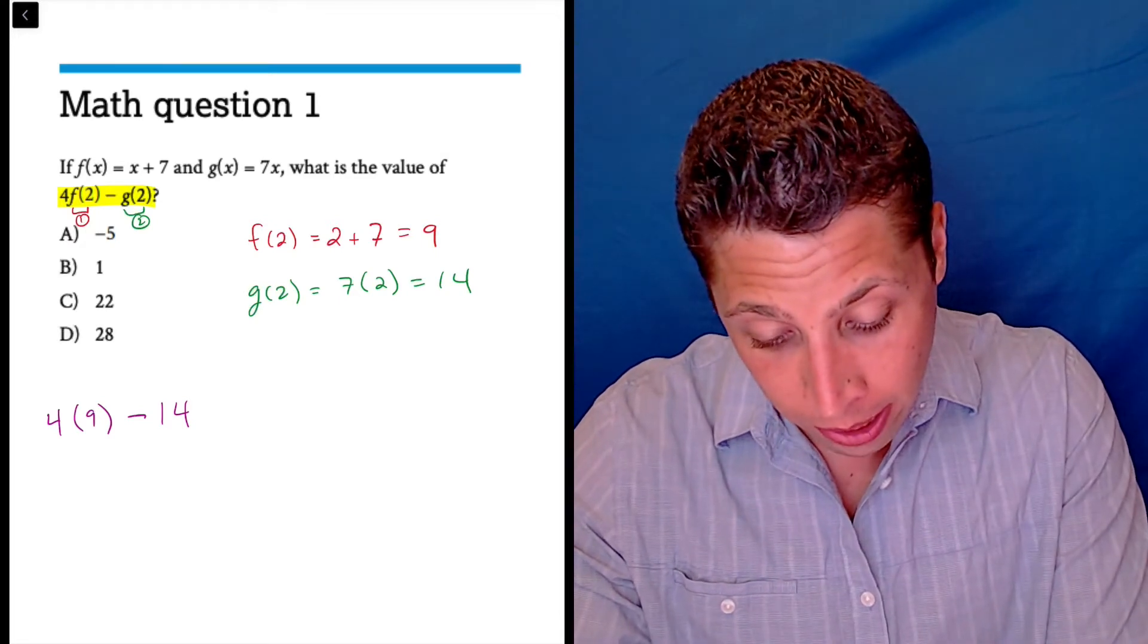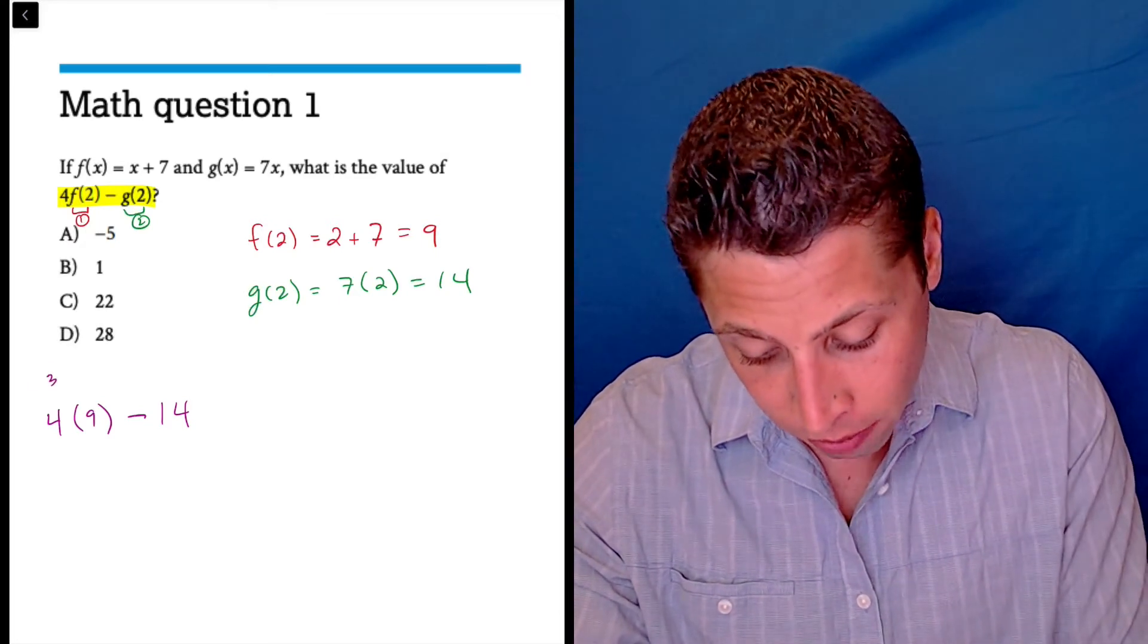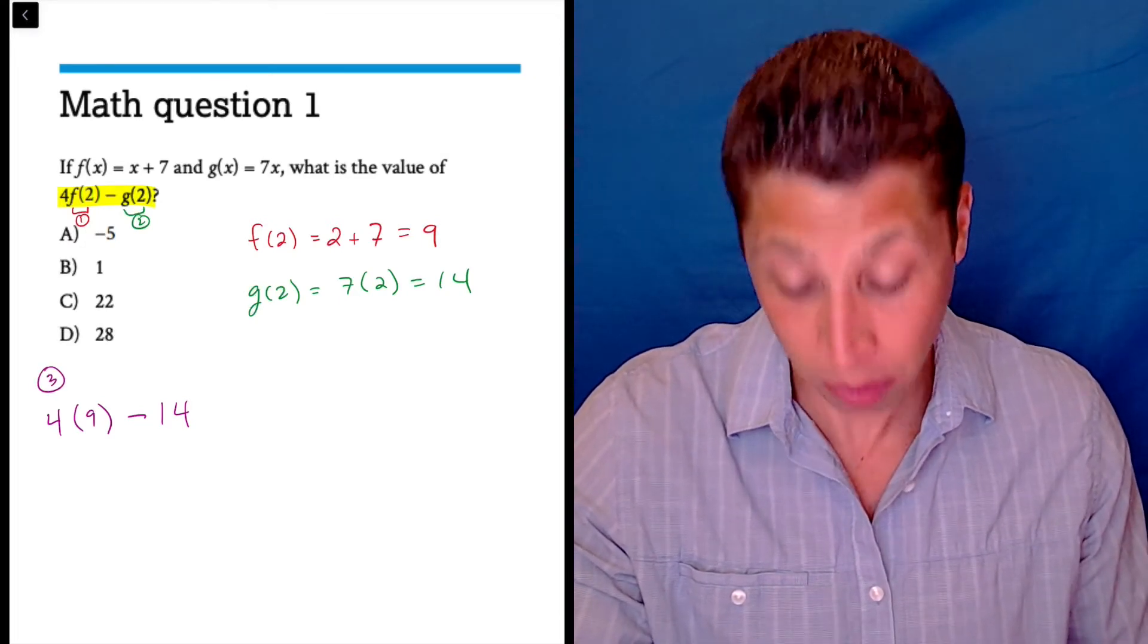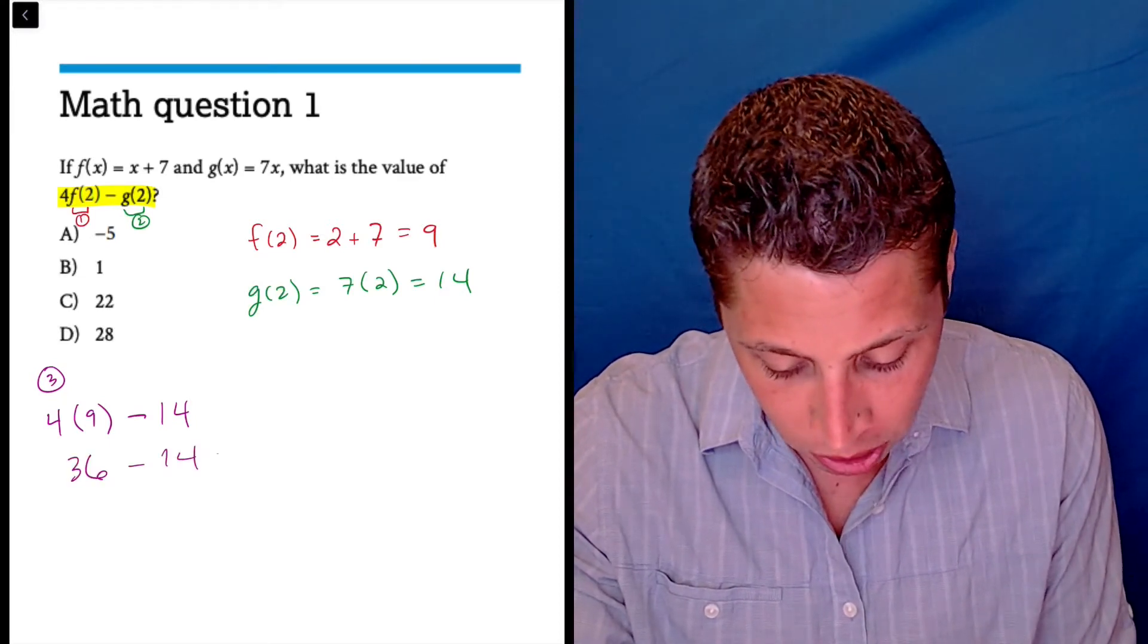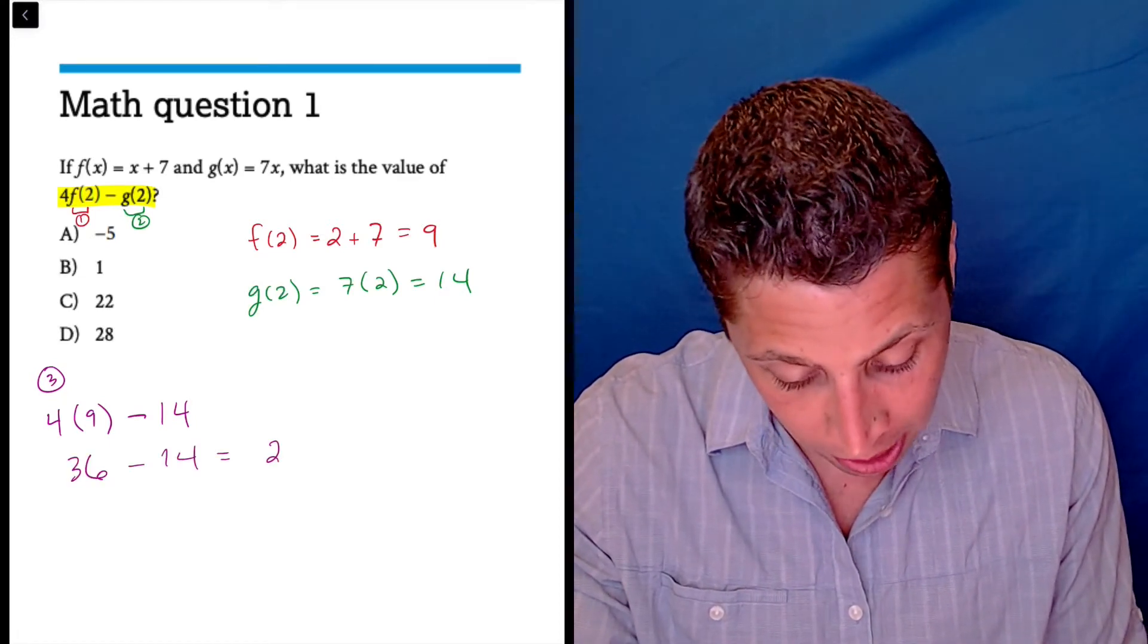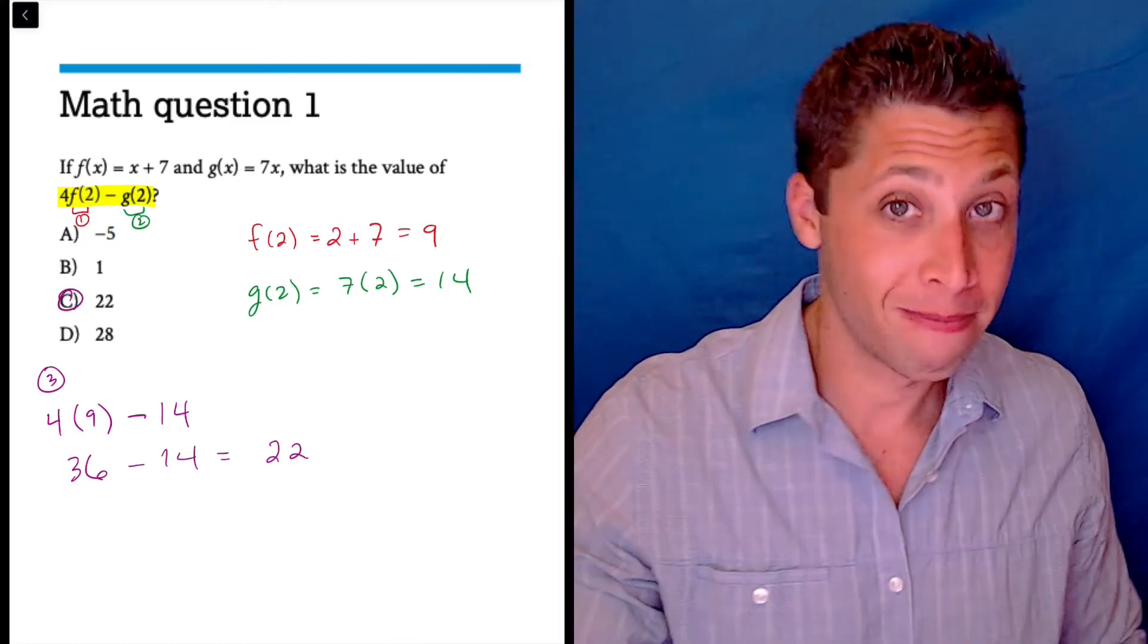Now, step three is just solve this, right? Like this is now just basic arithmetic. Four times nine is 36, minus 14 is 22. Choice C. That's it.